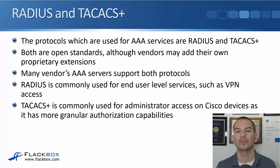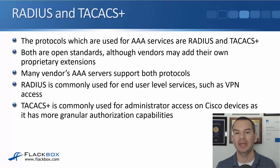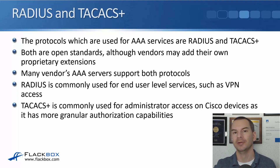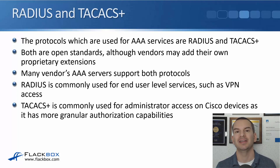The protocols used for AAA are RADIUS and/or TACACS+. Both are open standards, although vendors may add their own proprietary extensions. Many vendors' AAA servers support both protocols. RADIUS is commonly used for end-user-level services such as VPN access — if users on the road VPN in to the corporate network, RADIUS is a better match. TACACS+ is commonly used for administrator access on Cisco devices because it has more granular authorization capabilities, giving better control over what commands a particular administrator is or is not allowed to run.